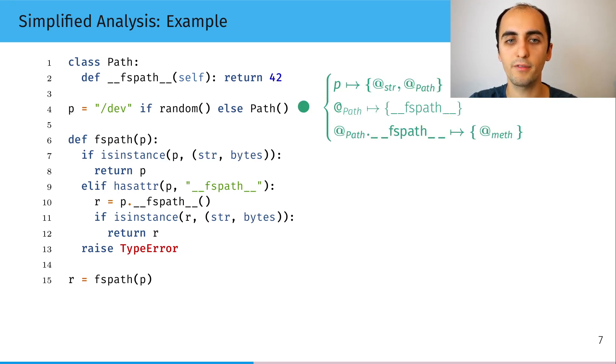And in the case of the path instance, we know that we have an fspath attribute which can only be a method. Then we store the definition of the fspath function and we arrive at the call to fspath of p. We inline this call and during this inlining,